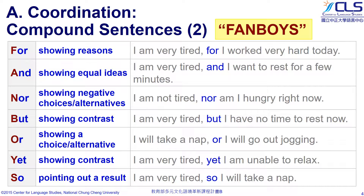These seven conjunctions have different functions. We use 'for' to show reasons. For example, we'd say, 'I'm tired, for I worked hard.' 'And' means there are two equal ideas going together, such as being tired and wanting to rest for a few minutes. When you see 'nor,' there must be negative choices or alternatives.